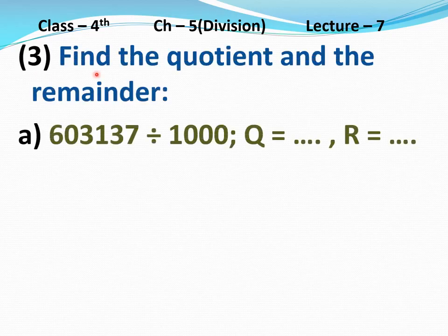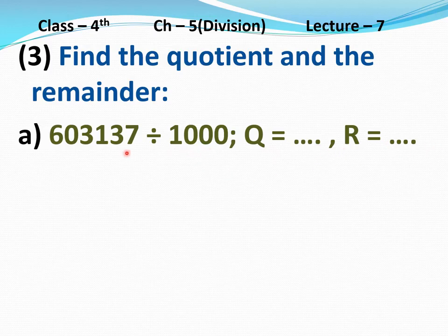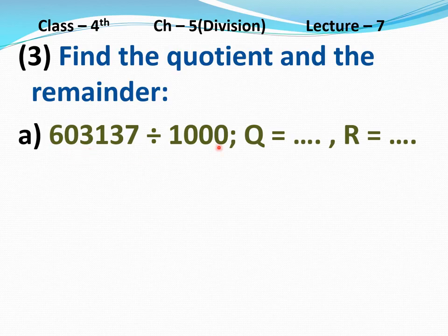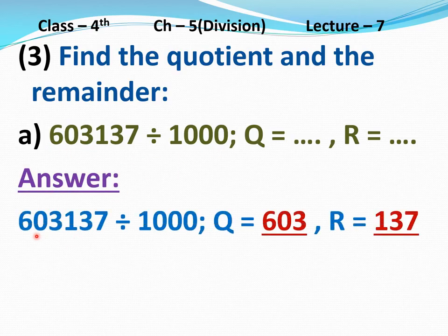Question number 3: Find the quotient and the remainder. Part A: 603137 divided 1000. The divisor is 1000, so the last three digits of the dividend — 1, 3, and 7 — form the remainder 137. The remaining digits — 6, 0, 3 — form the quotient 603. Answer: Quotient equal to 603, Remainder equal to 137.